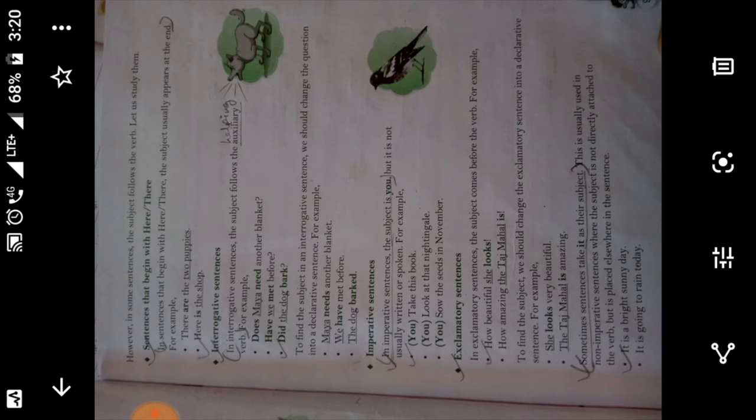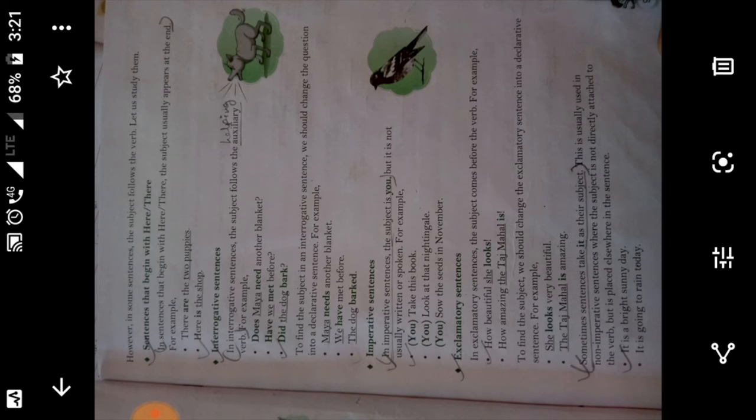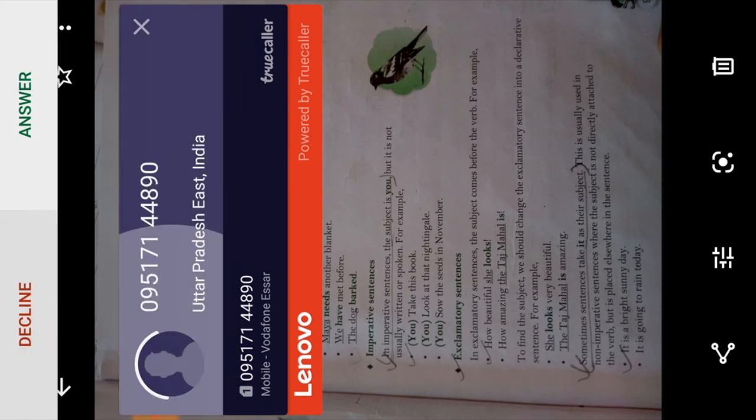Next, exclamatory sentences. In exclamatory sentences, subject comes before the verb. In exclamatory sentences, the subject comes before the verb. Example: How beautiful she looks. Here she is our subject. Looks is the verb. Next example: How amazing the Taj Mahal is. Is again is our verb. The Taj Mahal is the subject. To find the subject, we should change the exclamatory sentence into declarative sentence.